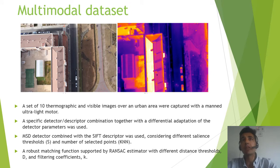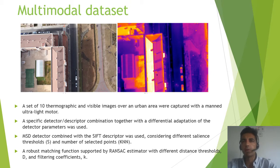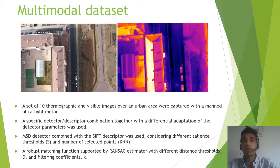Regarding the multimodal dataset, a set of 10 thermographic and visible images over an urban area were captured with a managed arch-light motor. A specific detector-descriptor combination together with a differential adaptation of the detector parameters was used. In the end, the MSD detector combined with the SIFT descriptor was the combination that provided the best results, considering different salience thresholds (s) and number of selected points.